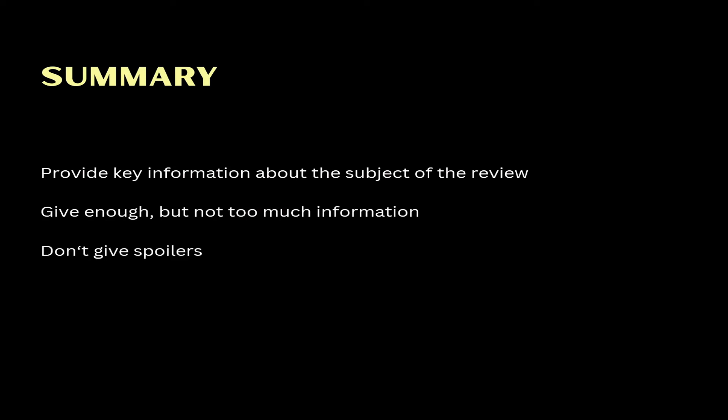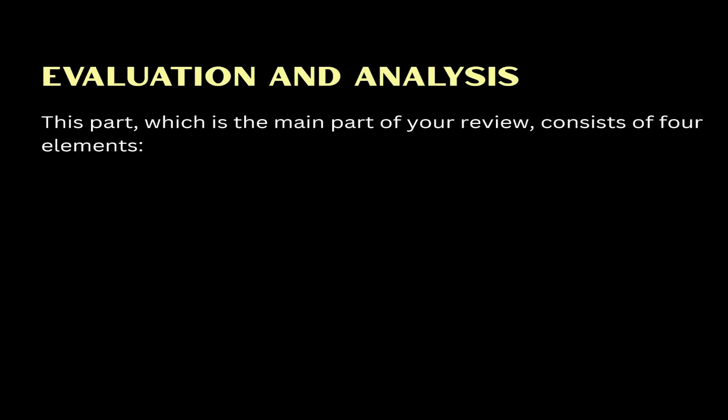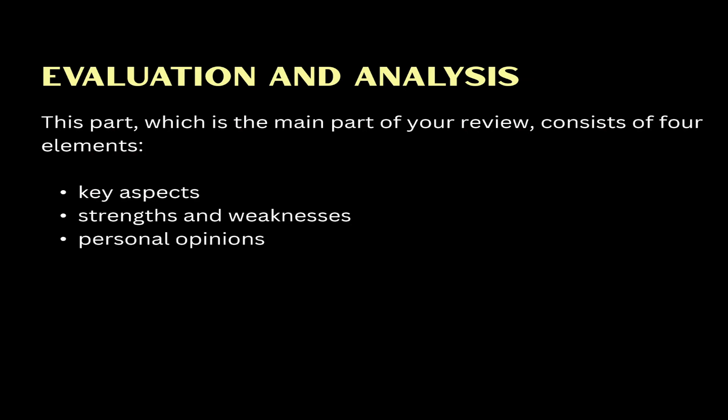After this, you will move on to the summary. In the summary, you will provide the essential information about the subject of the review — make sure not to get into too much detail, but still provide enough information for the reader to understand what you are writing about. If you are writing a book or film review, make sure not to reveal too much information about the plot and spoil the experience for the potential consumer. After providing the summary, you can move on to evaluation and analysis — the main part of your review — which consists of four elements: key aspects, strengths and weaknesses, personal opinions, and comparisons. You don't have to include these in this order, but these elements should be the focal point of the main part.